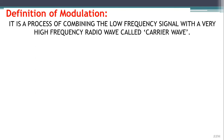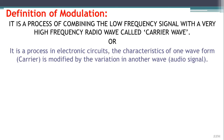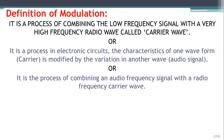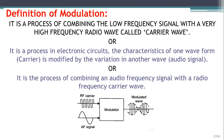Modulation is defined as the process of combining a low frequency signal with a very high frequency radio wave called the carrier wave. It is a process in an electronic circuit where the characteristics of one wave, the carrier, are modified by the variation in another wave, the radio signal. A AF signal is called the modulating wave, and the resulting wave produced is called the modulated wave. During modulation, some characteristics of the carrier wave are varied in time with the modulating signal.